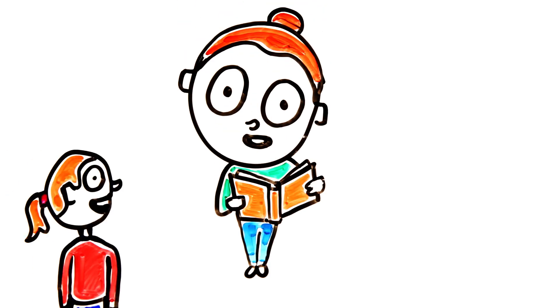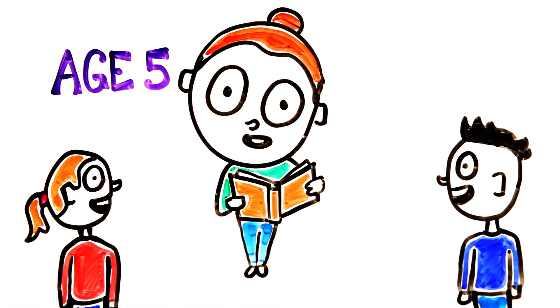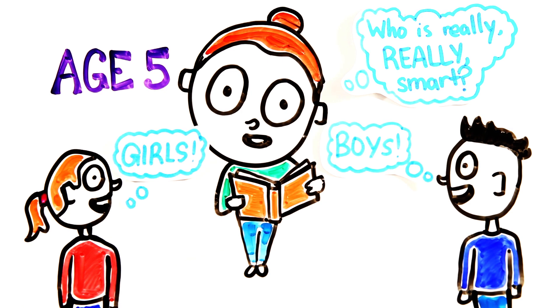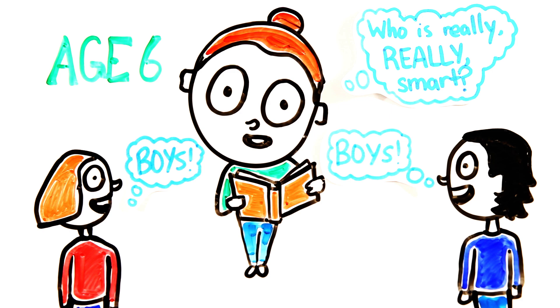And girls pick up on these biases as early as 6 years old. When told a story at age 5 about a person who is really, really smart, both boys and girls associate intelligence with their own gender. But by age 6, both girls and boys picked a male character as the smartest.